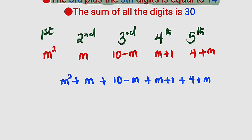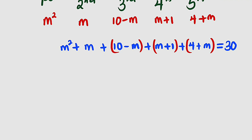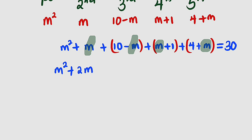Collecting like terms: m and negative m cancel to 0. The remaining m terms are m plus m, giving 2m. The constants are 10 plus 1 plus 4, which equals 15. So we have m squared plus 2m plus 15 equals 30.